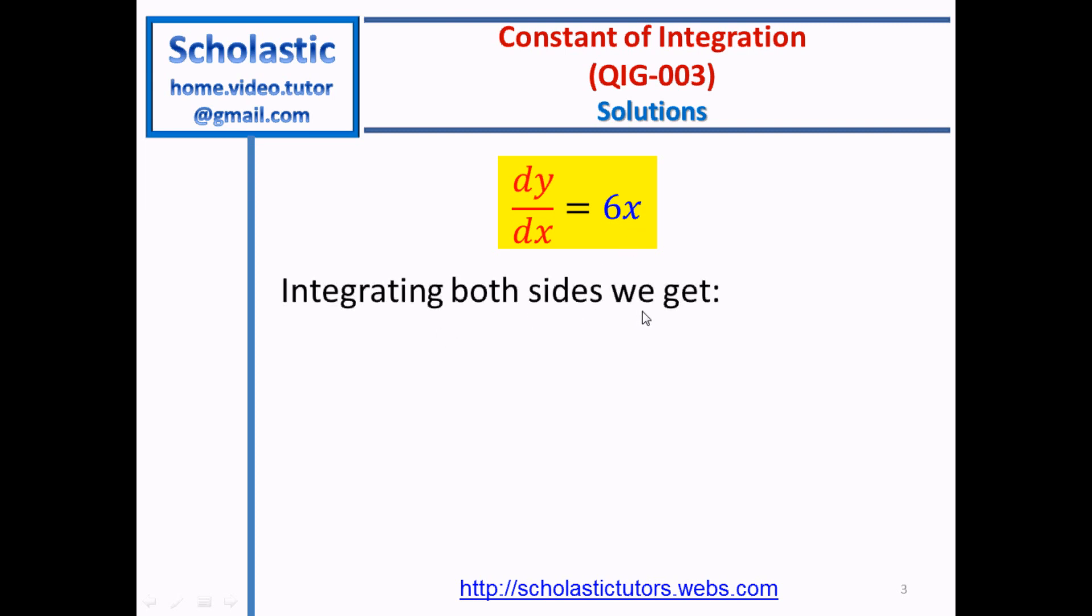Given dy by dx equals 6x, if we integrate both sides we get integral of dy by dx equals y equals integral of 6x dx equals 3x squared plus K, where K is a constant.